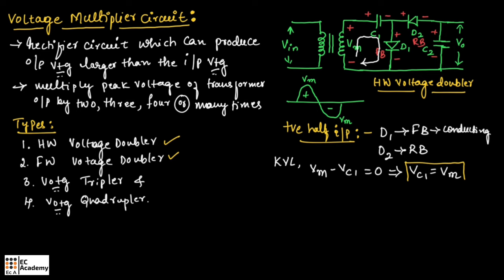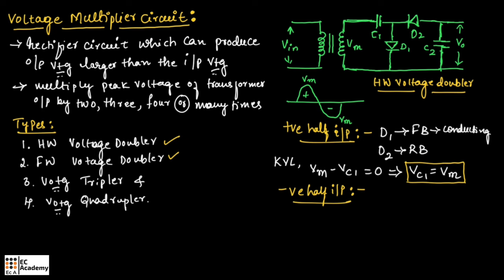Now, let us consider the negative half of input voltage. During the negative half, the polarity across the secondary of the transformer will be negative and positive. Across diode D1 it will be negative and positive, across D2 it will be negative and positive, and across capacitor C2 it will be negative and positive. Since capacitor C1 is already charged with voltage Vm, its polarity will be retained as positive and negative. Due to these polarities, diode D1 is reverse biased and diode D2 is forward biased, and D2 will be conducting while D1 is off.